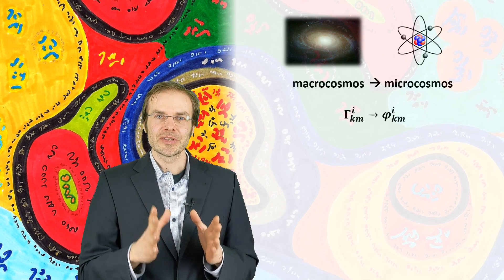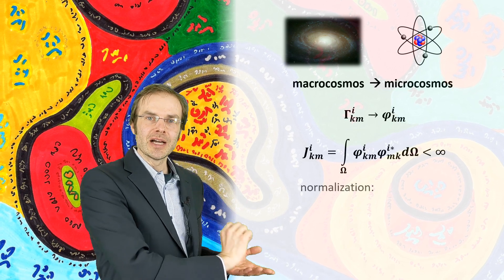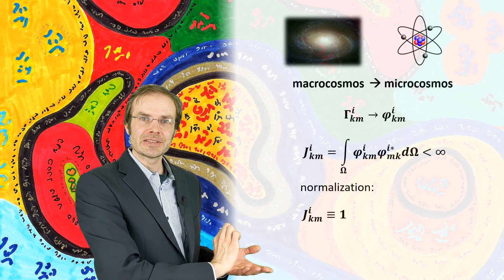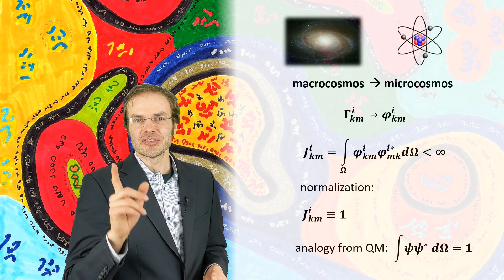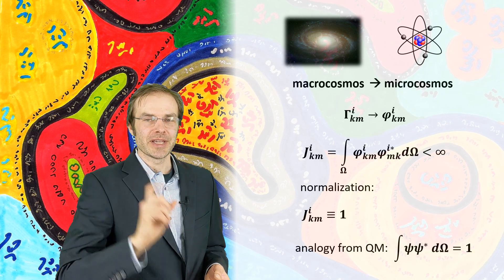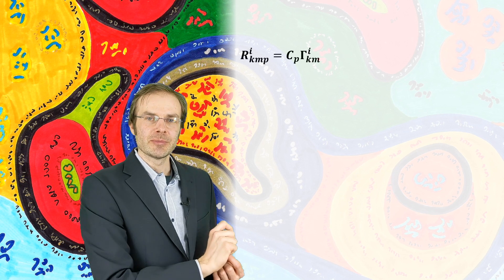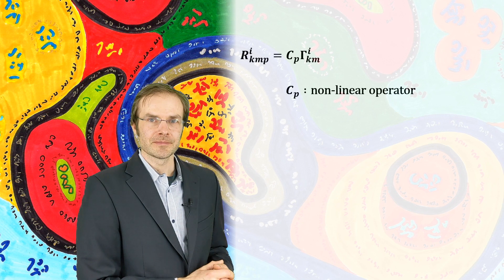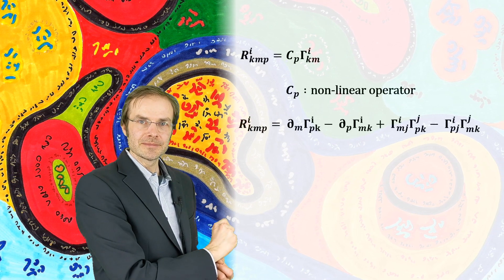The phi symbols must converge, and therefore we can define a convergence by an integral and normalize it. That's nothing else than what we do in quantum mechanics when we normalize the probability state function psi — we will keep this analogy in mind. In Riemann geometry, we can define an operator that defines the relationship between the Christoffel symbols and the four-indexed Riemann tensor, defined by this equation.